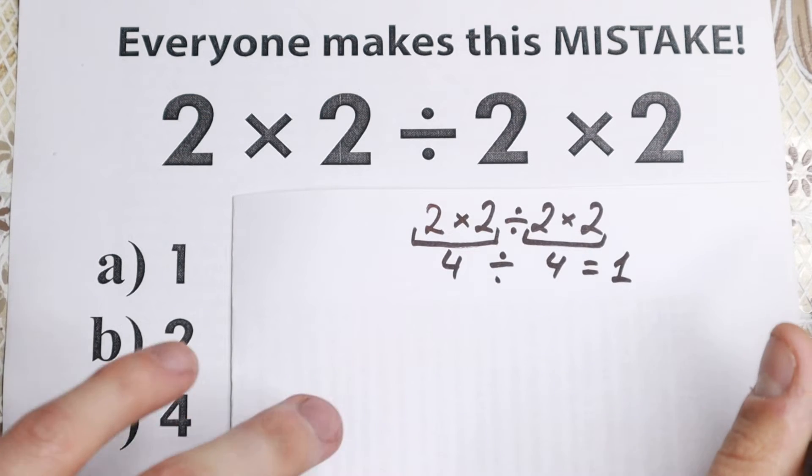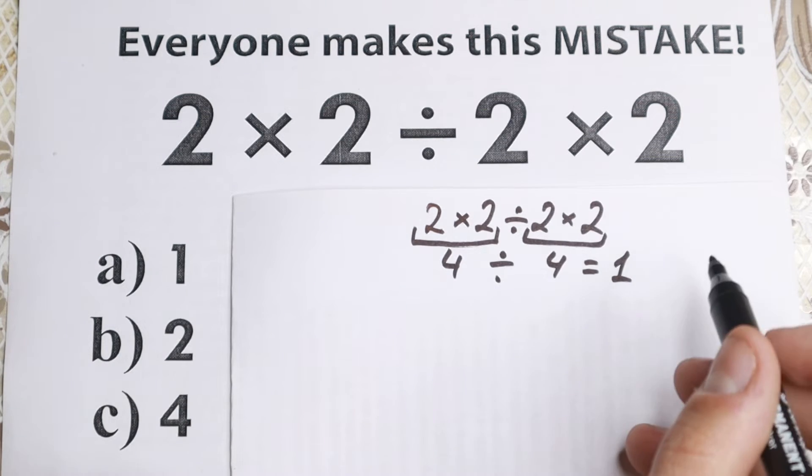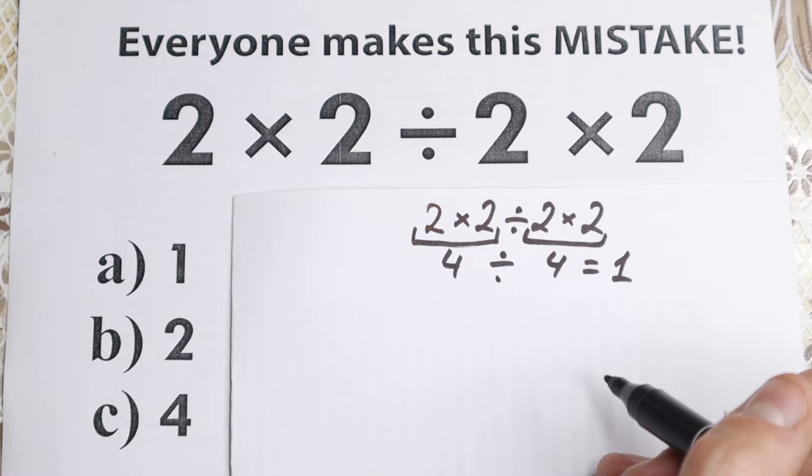And they say, the correct answer is 1. So as you can see according to this approach a correct answer is 1. So obviously whatever order you select is going to create a different answer. So we need to understand what is the correct order to do this problem.